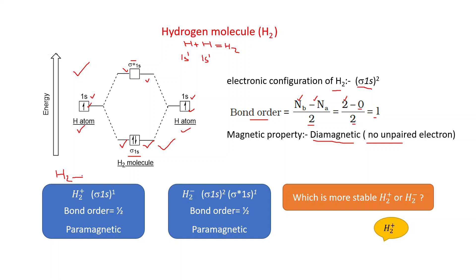Now consider the ionization process where H₂ loses one electron, converting into H₂⁺. The electronic configuration of H₂⁺ is sigma 1s¹. Bond order = (1 − 0) / 2 = 0.5. Since it contains one unpaired electron, H₂⁺ is paramagnetic in nature.